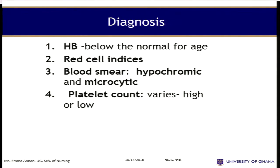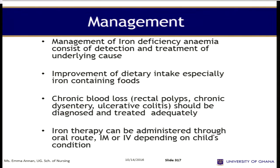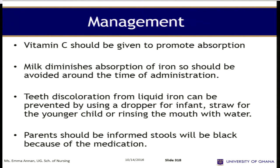Diagnosis is done by checking the hemoglobin, red cell indices, blood smear for hypochromic or microcytic cells, and platelet counts. Management includes detecting and treating the underlying cause, improving dietary intake especially iron-containing foods. Chronic blood loss such as from rectal polyps, chronic dysentery, or ulcerative colitis should be diagnosed and treated. Iron therapy can be given orally, IM, or IV depending on the child's condition. Vitamin C should be given because it promotes iron absorption. Milk diminishes absorption of iron and should be avoided around the time of iron administration.